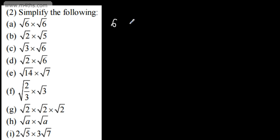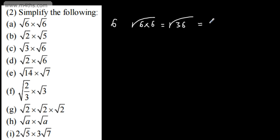If you want to see this as the root of 6 multiplied by 6, that would give us the root of 36, which we know to be a perfect square, and that's 6. Ultimately though, if we simply employ the property that the root of A multiplied by the root of A is equal to A, that's nice and straightforward.